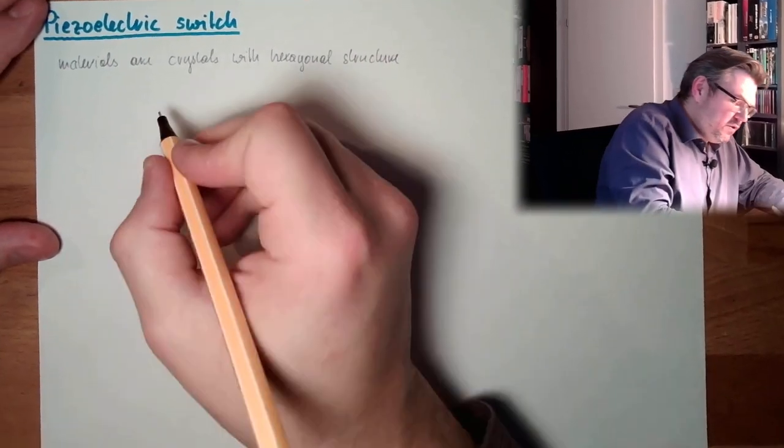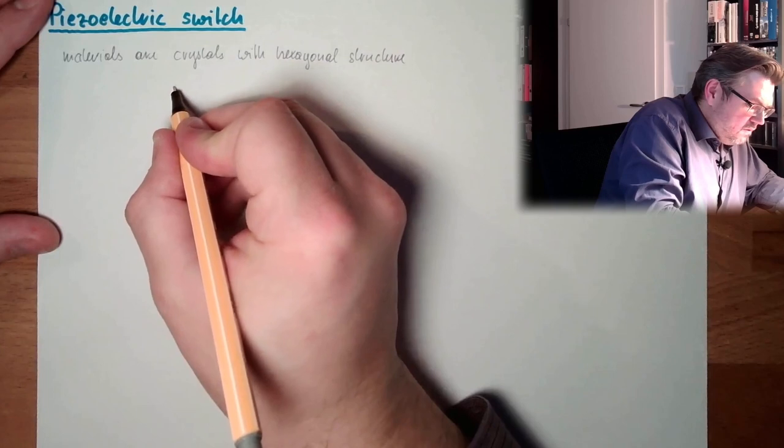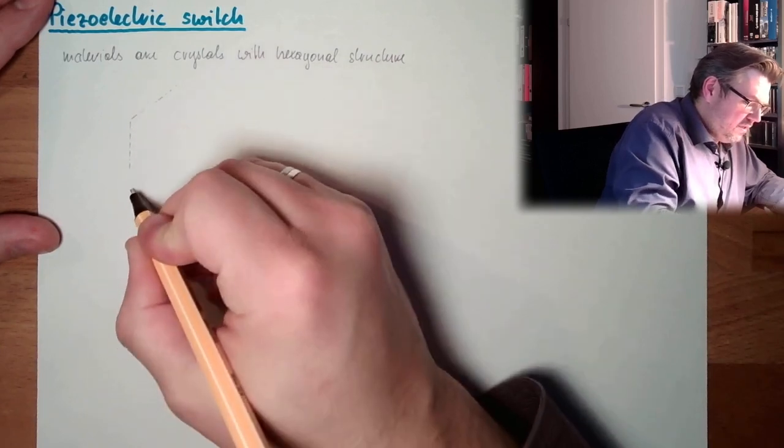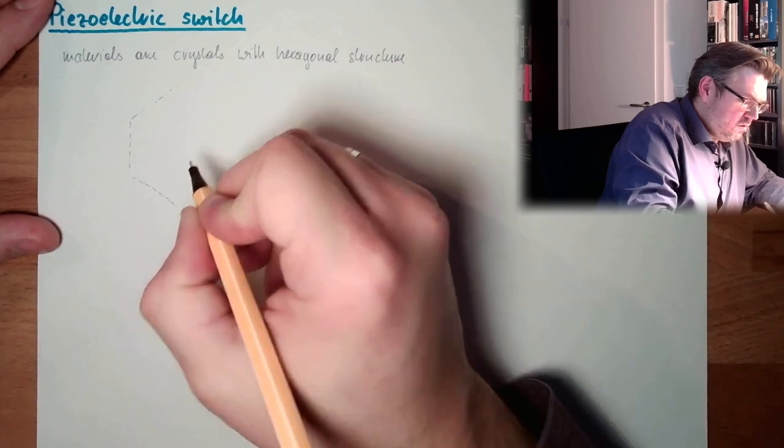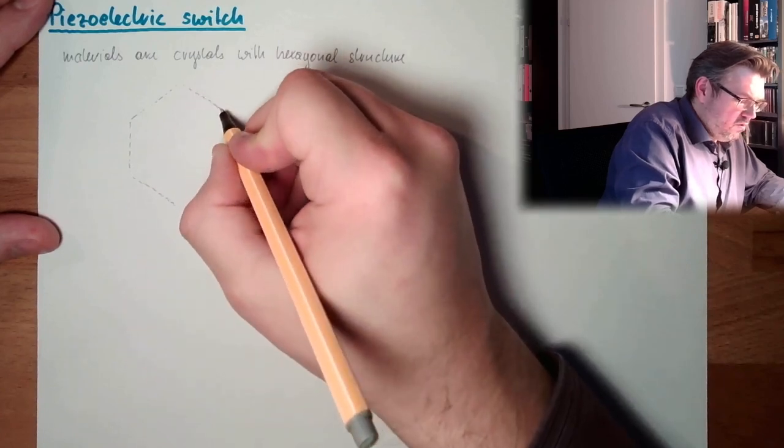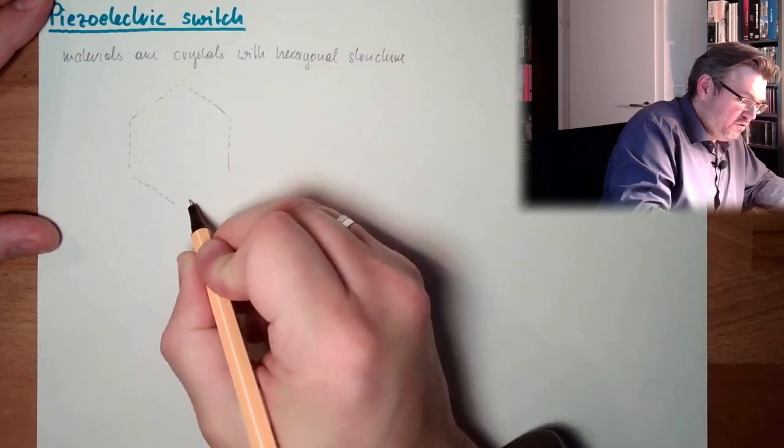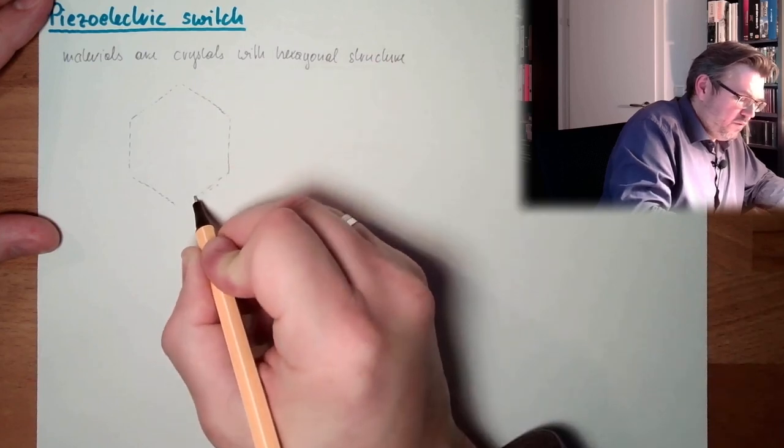What does it mean, hexagonal structure? Let's draw a hexagonal. I hope I can manage that this hexagon looks somehow symmetrical, because usually crystals are very symmetric. This is why they look that good.